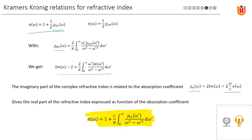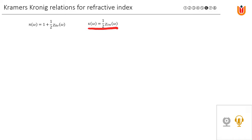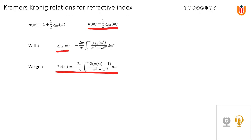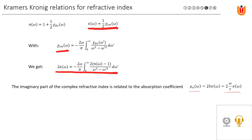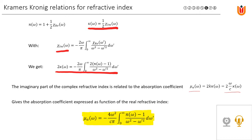We can do the same exercise for the imaginary part. Starting from the Kramers-Kronig relation for the imaginary part of the susceptibility expressed as an integral over the real part of the susceptibility, and rearranging using the relation μ_A(ω) = 2ω/c · κ(ω), we solve to get an expression for the absorption coefficient expressed as an integral function of the real part of the refractive index.